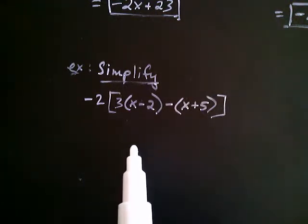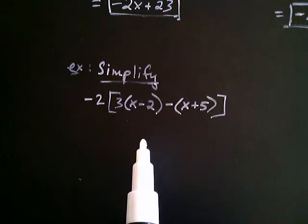minus parentheses x plus 5. Okay, so, when I look at this problem, the first thing I notice is that we have three sets of grouping symbols. Do you see them all?